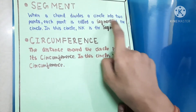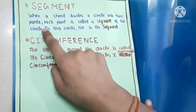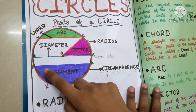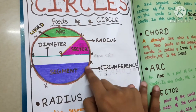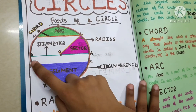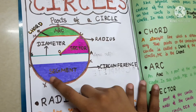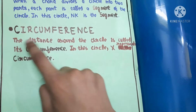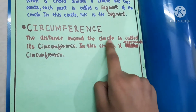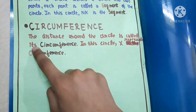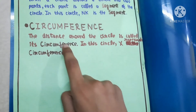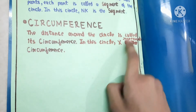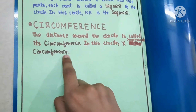In this circle, NK is the segment. Circumference: the distance around the circle is called the circumference. In this circle, X represents the circumference.